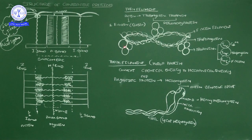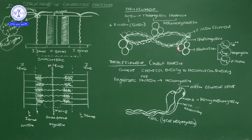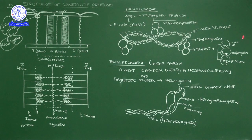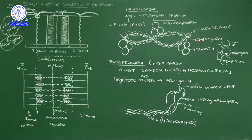At regular interval places along the actin filament, some extra protein structures are present — those protein structures are called troponin. Troponin has three subunits: TNC, TNT, and TNI. These are diagrammatically shown as three balls.